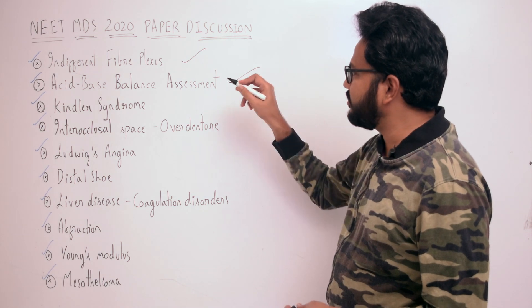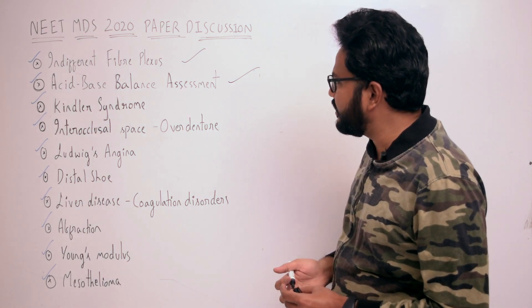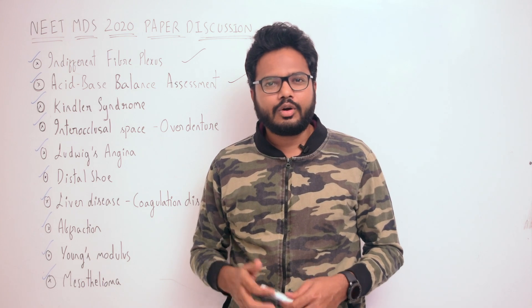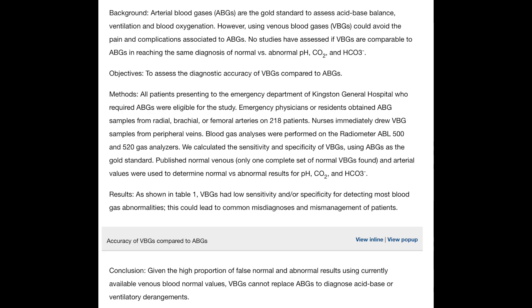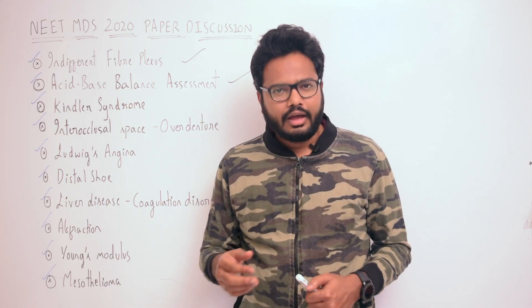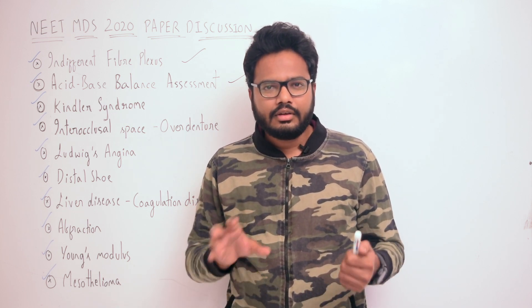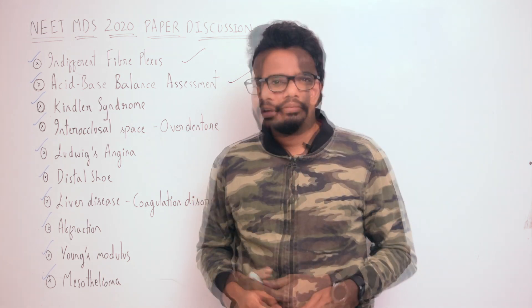Moving on to the next question: acid-base balance assessment — do we use arterial blood or venous blood? Arterial blood gases (ABGs) are the gold standard to assess acid-base balance, ventilation, as well as blood oxygenation. You can review additional information given in this article.